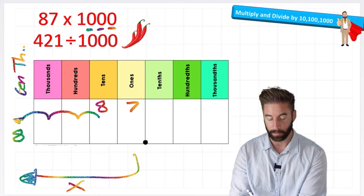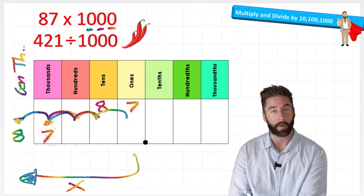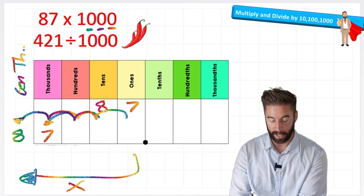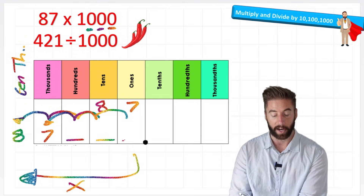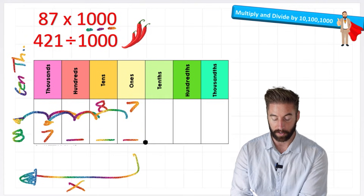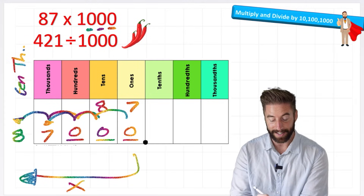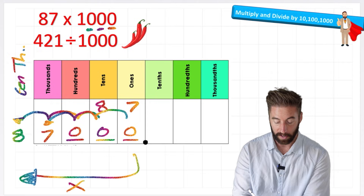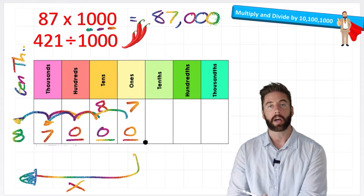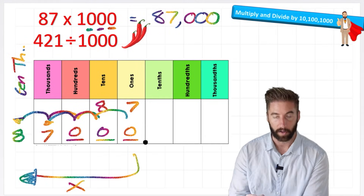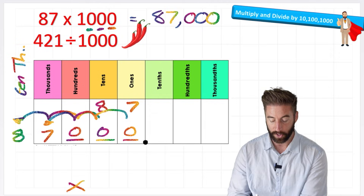So my 8 lands in there. I'm going to do the same thing to my 7: 1, 2, 3. And now I have these 3 gaps before my decimal that I need to fill with placeholders: 1, 2, 3. So my answer to 87 times 1,000 equals 87,000.